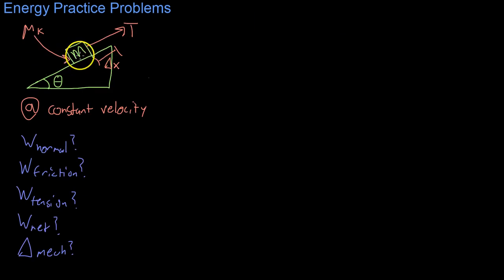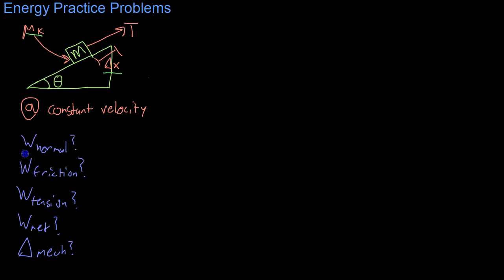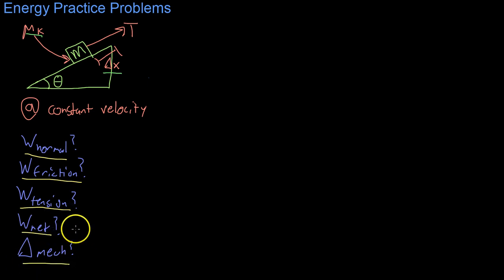Now we're going to look at a different problem in which we have some sort of ramp with angle theta and a block being pulled up by some tension over some distance delta x. Its motion is being slowed down by a frictional force with coefficient of kinetic friction mu k. What we want to know is the work done by the normal force, the frictional force, the tension, what the net work is, and the total change in mechanical energy.